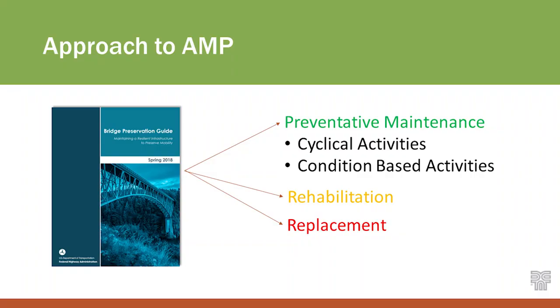In the FHWA Bridge Preservation Guide, they categorize different actions for preservation: preventative maintenance, rehabilitation, and replacement. Within preventative maintenance, there are cyclical activities — essentially cleaning the bridge, sweeping — activities that DOT maintenance can perform themselves. Condition-based activities are more involved: deck patching, deck repairs, painting, joints, overlays, et cetera. A step further is rehabilitation: full or partial deck replacement, pier strengthening, member strengthening, and so on. And then the red is when you need to replace the bridge. We looked at all of these for the Moyet Bridge.